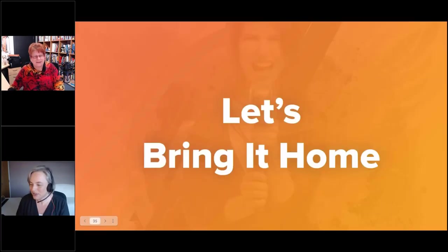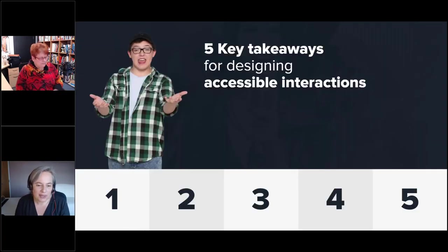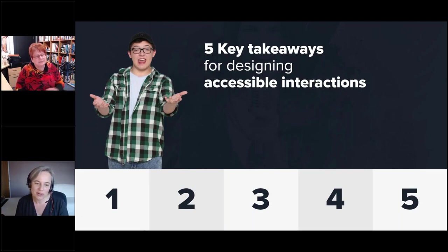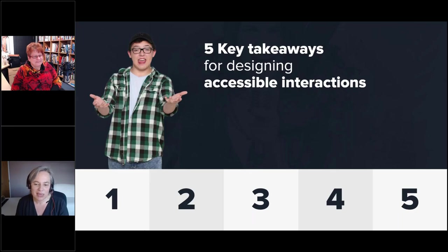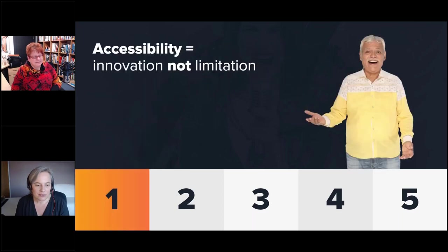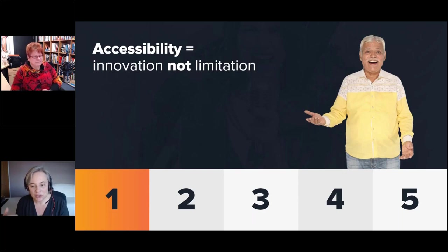Thank you, Chris — that was really interesting. We're going to finish the webinar by focusing on five key takeaways. The first is that accessibility equals innovation, not limitation. We tend to think that accessibility means we're limited — that we can't do what we want to do — but that's not the case. Accessibility just makes you think differently; it gives you the potential to stop designing using your own biases and really leads to innovation and better learning.